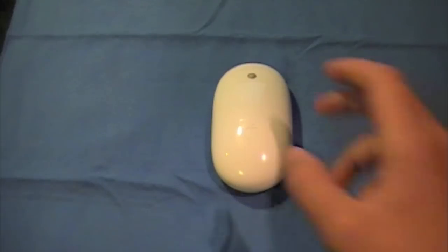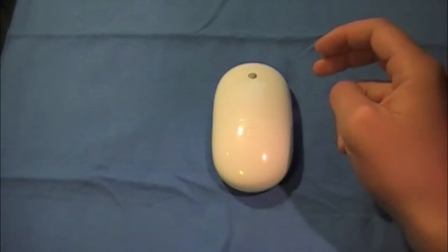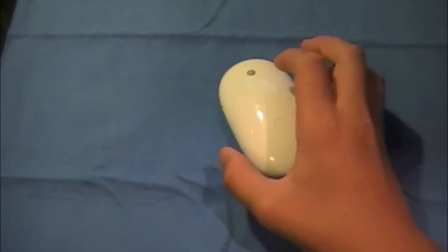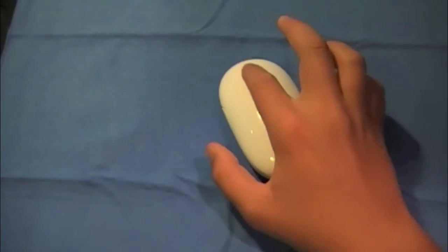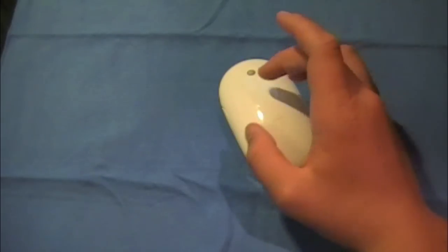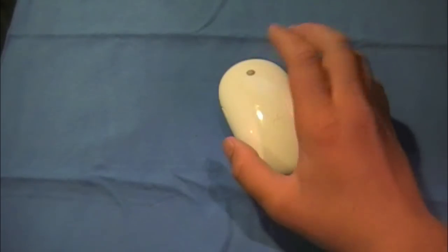The first thing, there's a couple things that make the Mighty Mouse so revolutionary and special. I'm just going to go over those features. As you guys see right here on the top it has a scroll ball which does have a lot of flaws but it does work very well. It scrolls up and down.